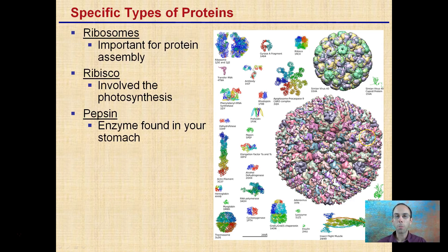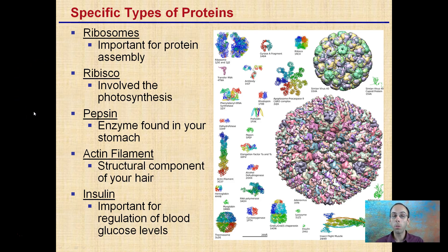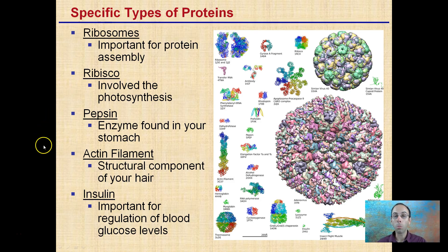Looking at specific types of proteins, ribosomes are important for protein assembly. They can be free-floating in the cytosol, or they can also be attached to the endoplasmic reticulum. Rubisco is a type of protein involved in the photosynthetic process. Pepsin is an enzyme found in your stomach to help break down food. Actin filaments are structural components of your hair, giving it its strength despite its very small diameter. And insulin is important for regulation of your blood glucose levels.